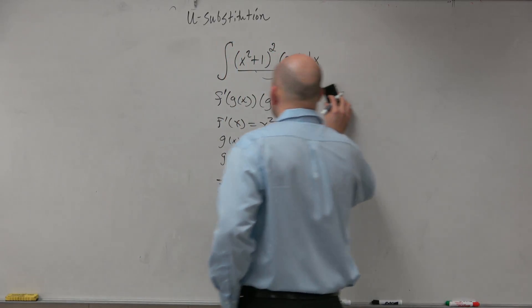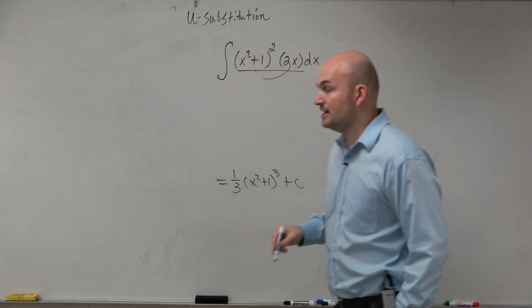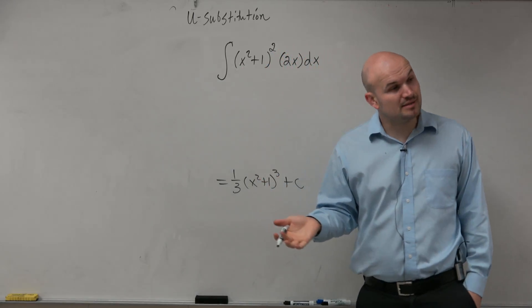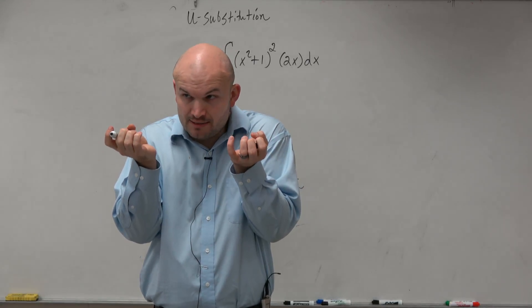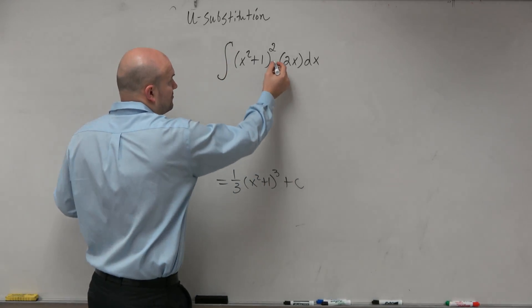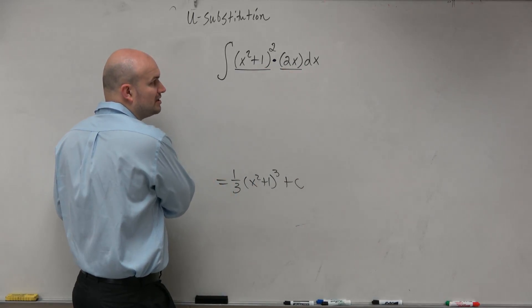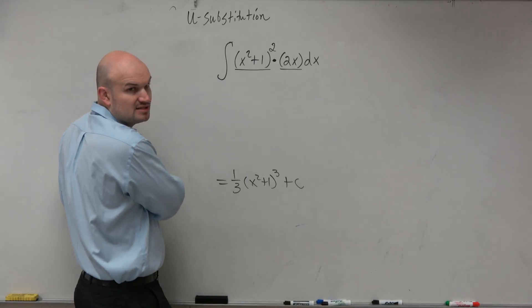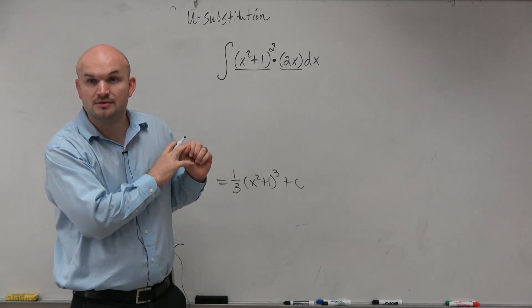So another way to do that is forget about looking for the pattern. If you don't see the pattern, what you want to do is identify what is the most complex function you have here. So you can see we have multiplication. We're basically comparing x squared plus 1 squared times 2x. The one that's the most complicated we could definitely say is x squared plus 1 squared, right? You guys would agree with that one?